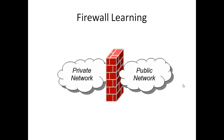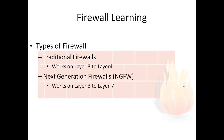Now we will see what are the types of firewall. Basically there are two types of firewall. One is the traditional firewall, which works on OSI layers 3 to 4. And the second is the Next Generation Firewall, or NGFW, which works from layer 3 to layer 7.